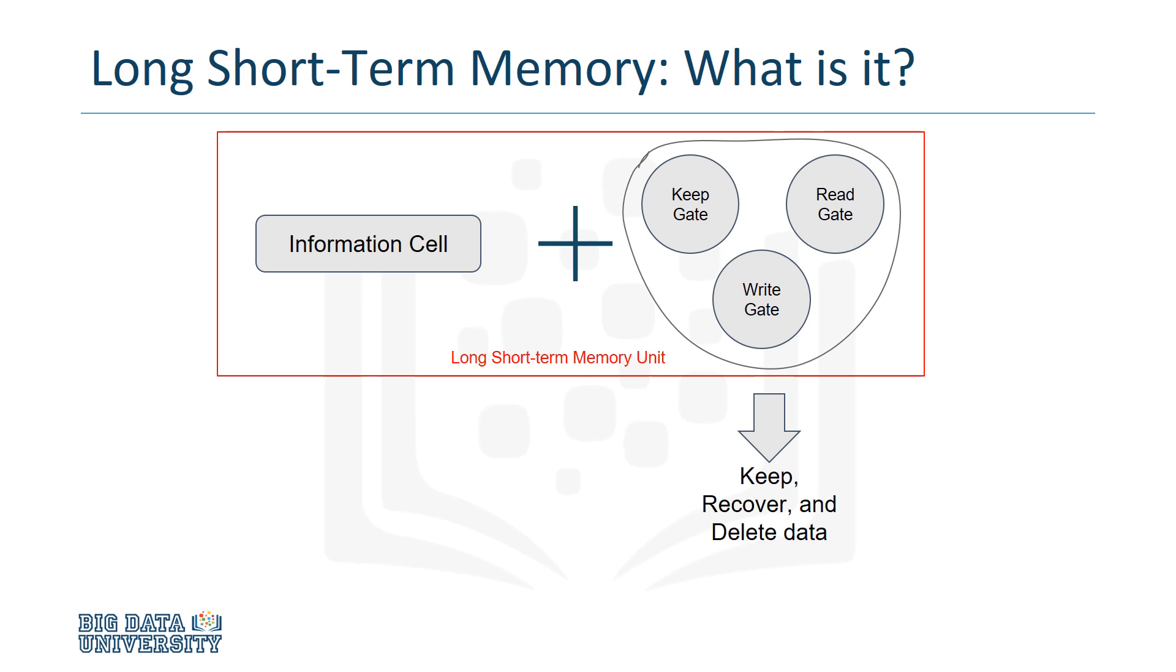These gates have a similar structure to the neurons in a traditional neural network, since they are multiplicative analog sigmoid activated nodes. By manipulating these gates, a recurrent network is able to remember what it needs and forget what is no longer useful.